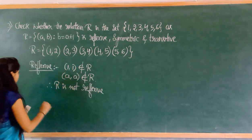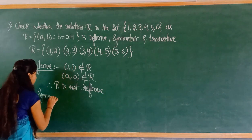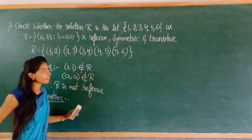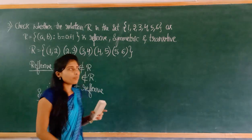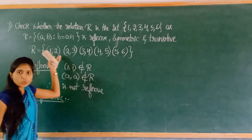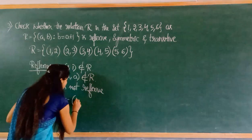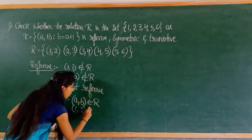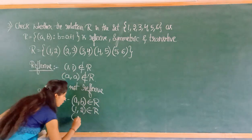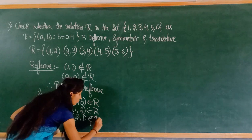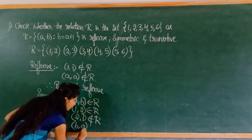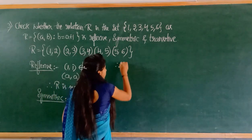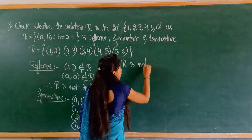Next, symmetric. For symmetric, if (a, b) belongs to R, then (b, a) should also belong to R. Suppose (1, 2) is in R — but (2, 1) is not in this set. So (1, 2) belongs to R but (2, 1) does not belong to R. Therefore, (b, a) does not belong to R, and R is not symmetric.